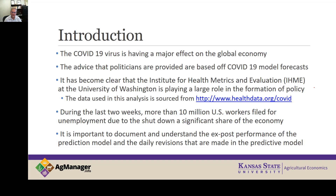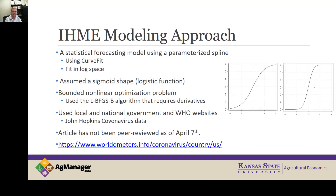Hopefully we won't have pandemics in the future, but it is really important to understand where our models are correct and where they are not. Using the information provided on the website, essentially it explains their modeling approach. They're using a statistical forecasting model using a parameterized spline. The spline function basically has an increasing rate function, then an inflection point, and then it increases at a decreasing rate until it eventually shapes off — it has that sigmoid shape. For those that have done logistic estimation in economics, it is a logistic type functional form.